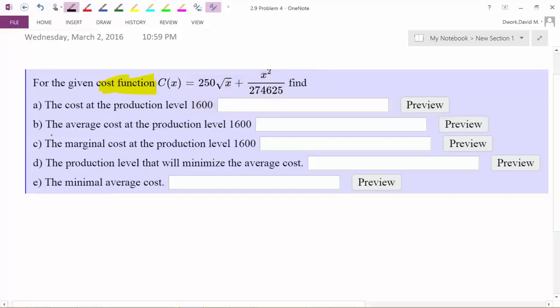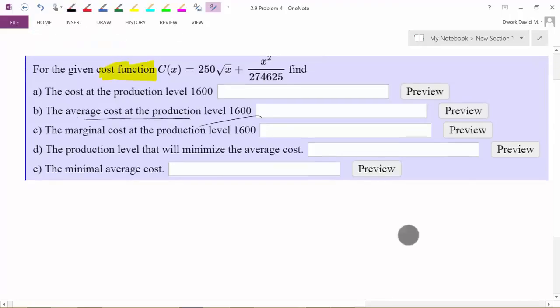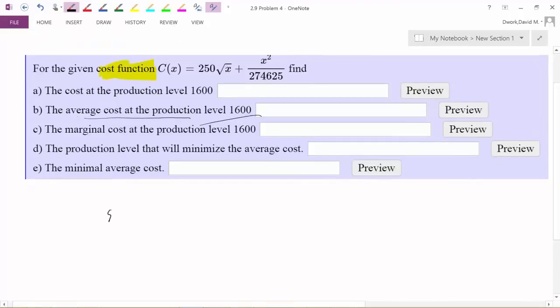Part B, the average cost. So now at that production level of 1600, so what does average, how do we calculate average? Like, so if I said I had a bowling score of 50, 75, and 95, we would take all those numbers and add them up by the number of numbers, right?